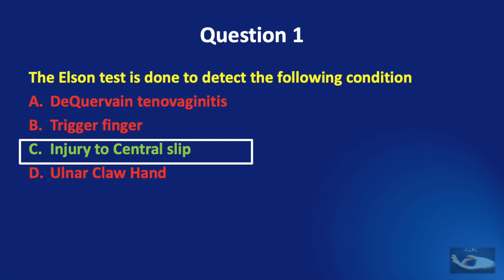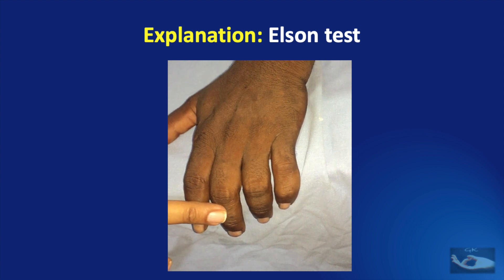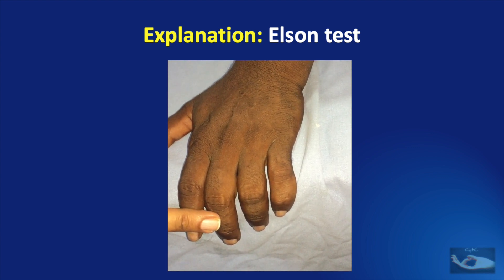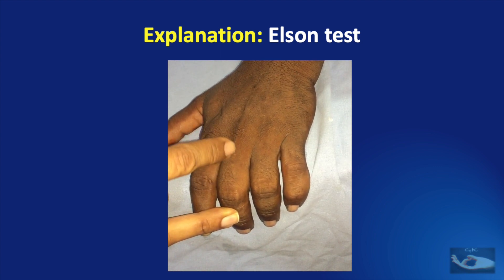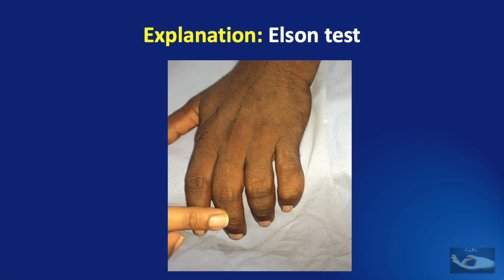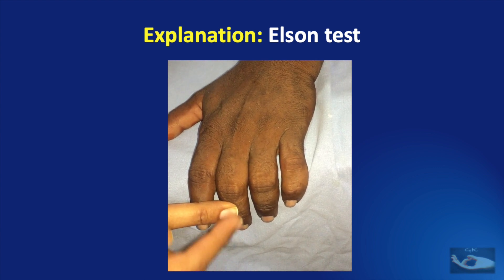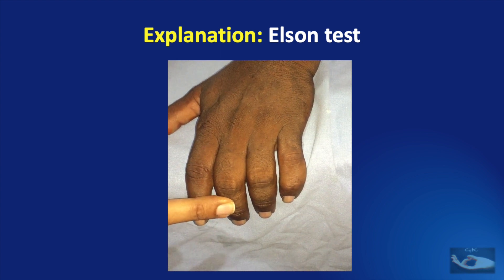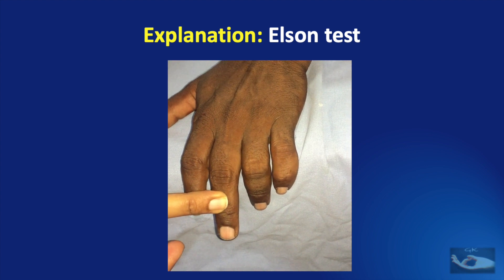The correct answer is injury to the central slip. The Elson test is performed as follows: the patient is asked to keep his fingers over the edge of the table such that the PIP joint is kept in 90 degrees flexion. The examiner places his finger over the dorsal aspect of the middle phalangeal region of the patient's finger and asks the patient to attempt to extend the PIP joint.